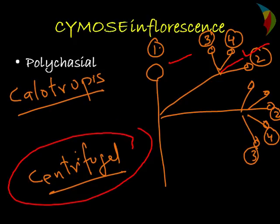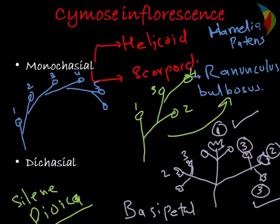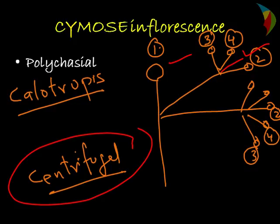So these were the three types of cymose inflorescences: monochasial, dichasial, and polychasial. In the next session we will discuss about the mixed type of inflorescences. Thank you.